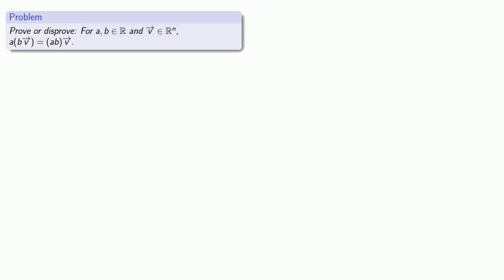So I could multiply our vector v by b, and then multiply the result by a, or I could multiply a and b together, and then multiply the result by v. And the question is, do I get the same thing? Well, let's check it out.